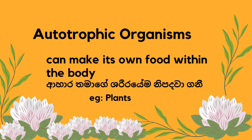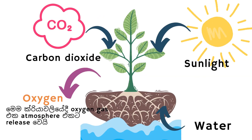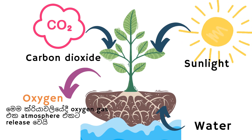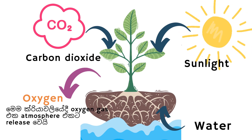Autotrophic organisms can make their own food within their body. An example is plants. The process by which plants produce their own food is called photosynthesis. Plants use carbon dioxide from air, soil water, and sunlight to produce food — that is glucose. In this process, oxygen gas is produced as a by-product and released to the atmosphere.